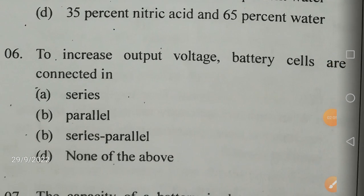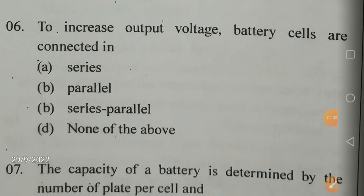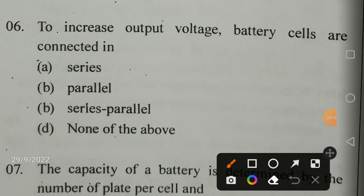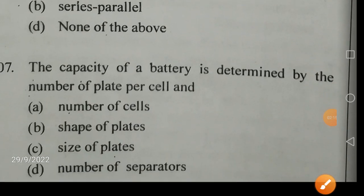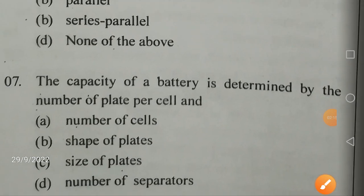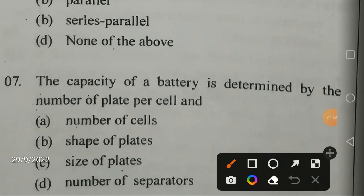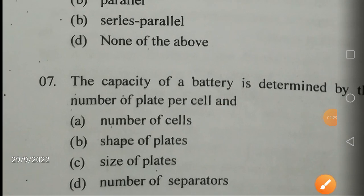To increase output voltage, battery cells are connected in series — series connection is much more effective. The capacity of a battery is determined by the number of plates per cell and the size of the plates. This is a very important dimension.